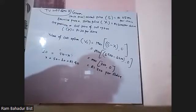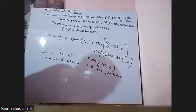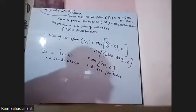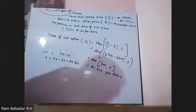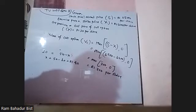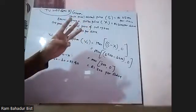If you buy the put option, the market price of the underlying stock and exercise price is $230. What do you think of the market price?